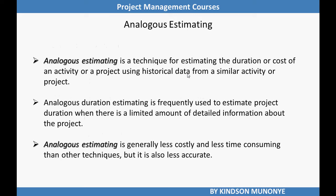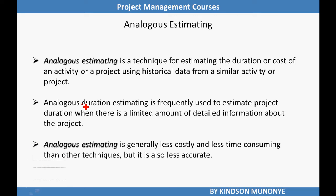Analogous estimating is very important. It is a technique for estimating the duration or cost of activities or a project using historical data from a similar activity or project. Analogous estimating is used to estimate project costs when there is a limited amount of detailed information about the project. We also used analogous estimating during estimate activity duration under the project time management knowledge area, and we are also using it to estimate activity costs here. One thing you should know is that it is less costly and less time consuming, but also less accurate than other techniques.